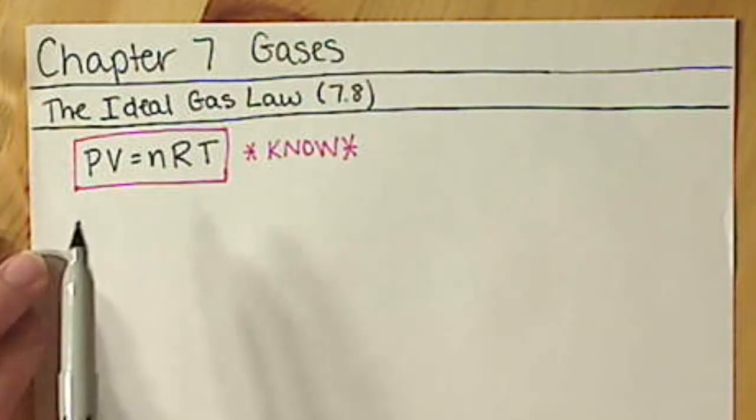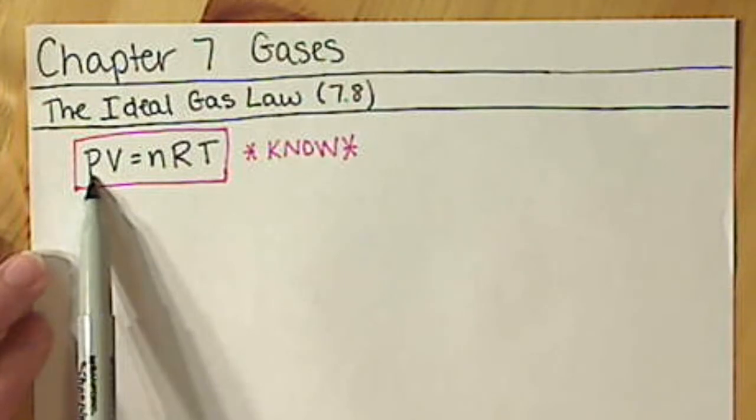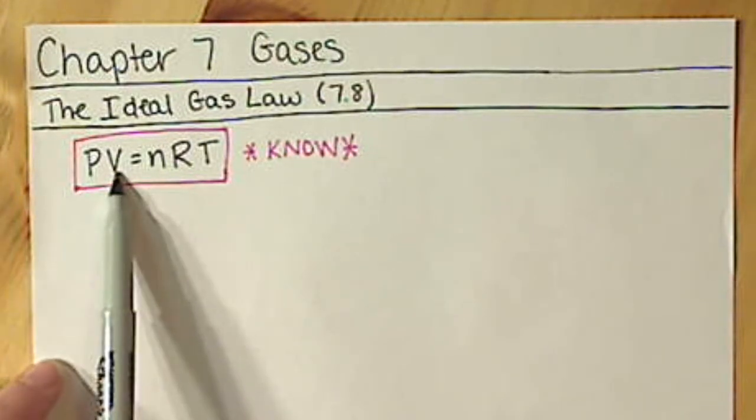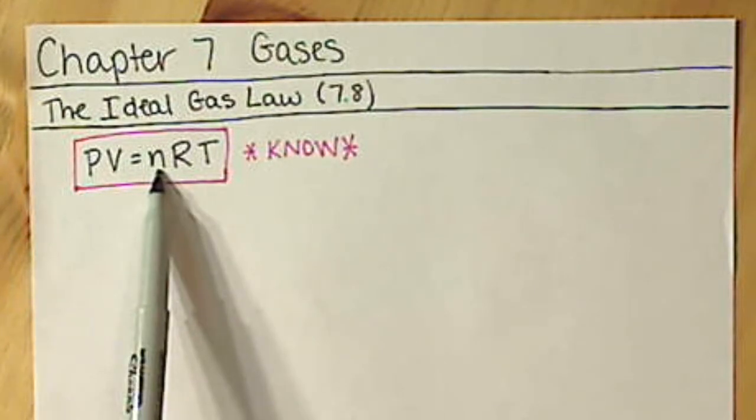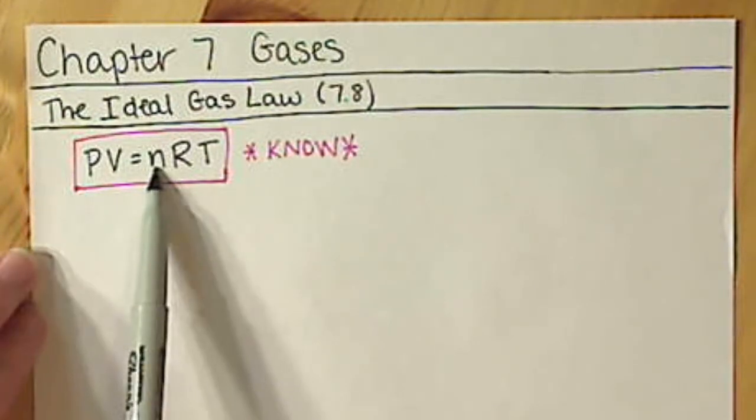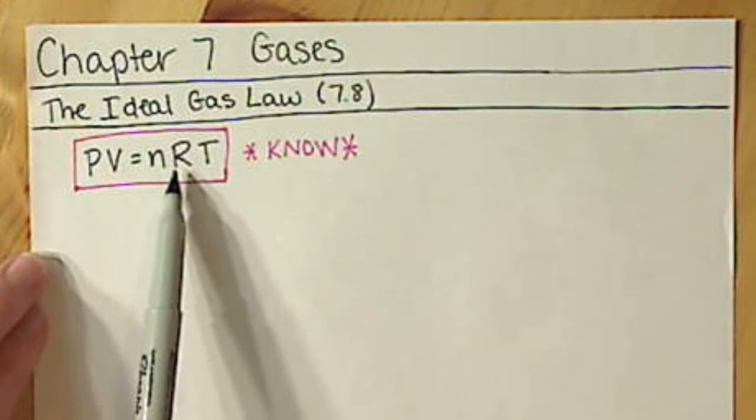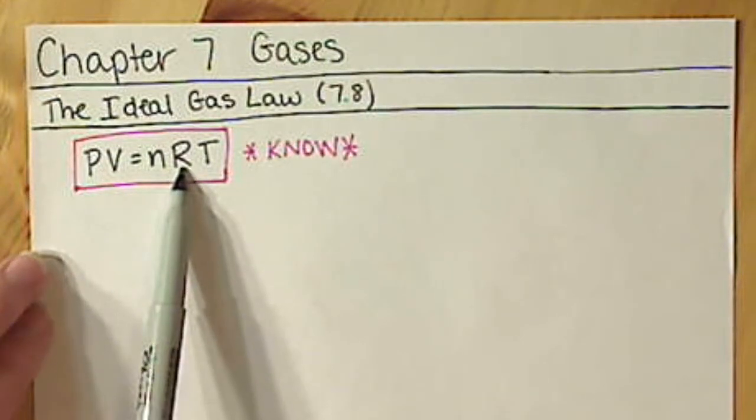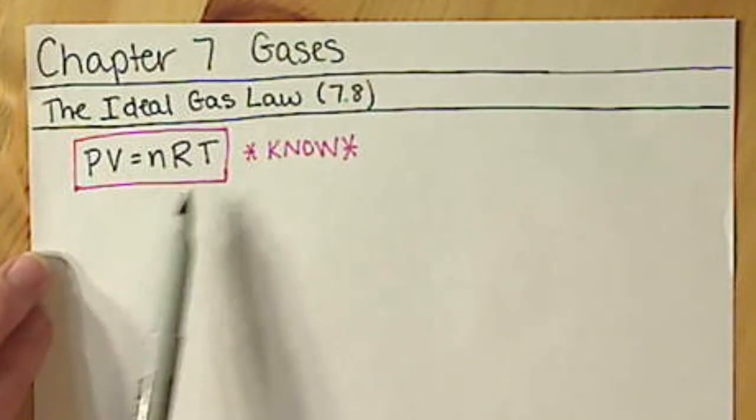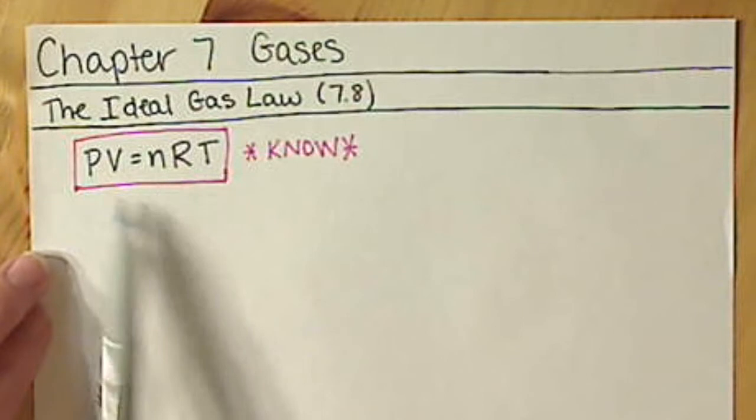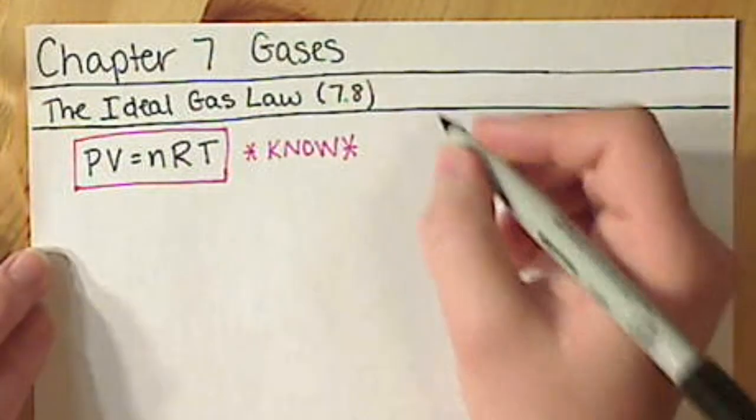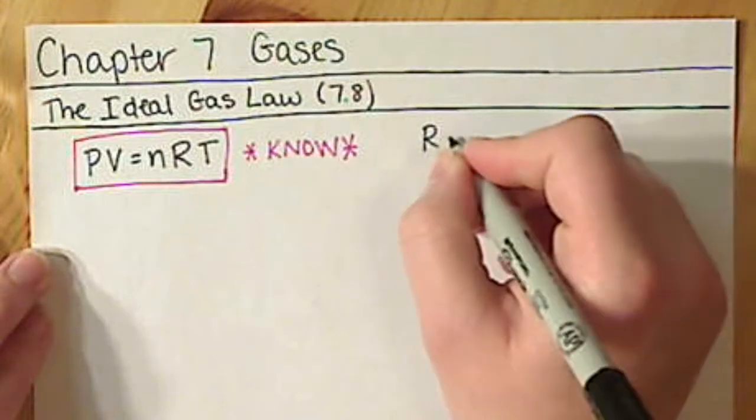So we have our different properties of gases. Pressure is a capital P. Volume is a capital V. The amount of moles, our amount of gas in moles, that's a lowercase n. Then temperature is a capital T. And this R value here, this is a constant, and it makes the equation work out for all of the relationships that had to be examined in order to get to this equation. So R is the gas constant.